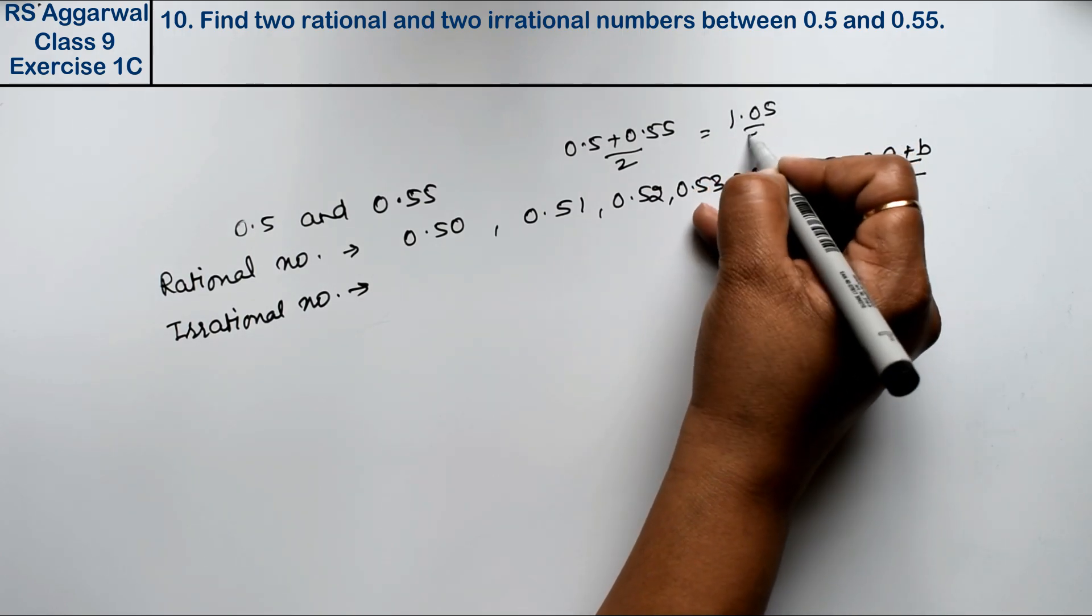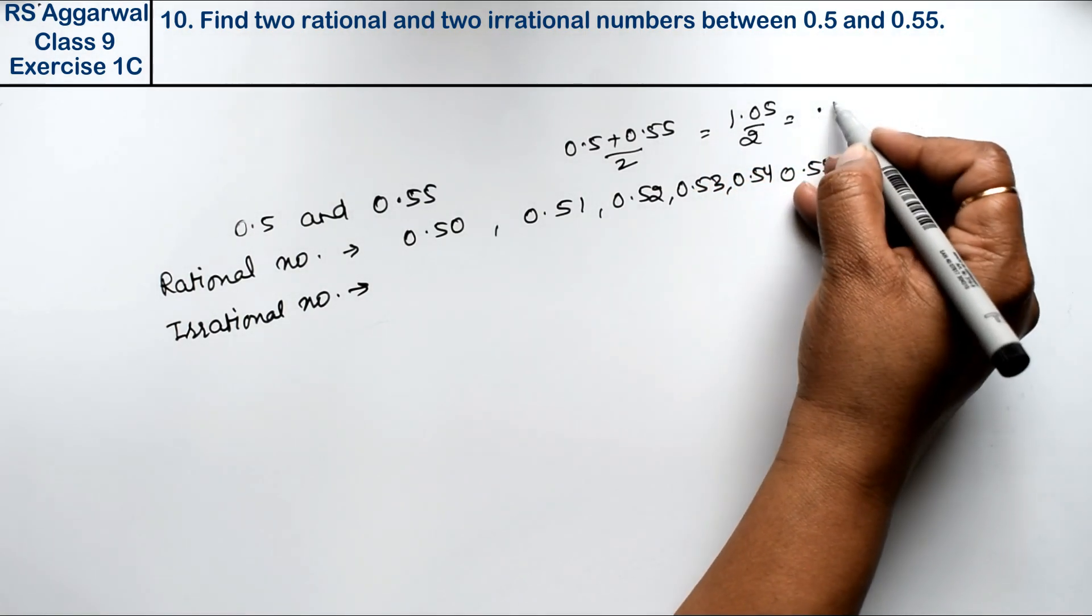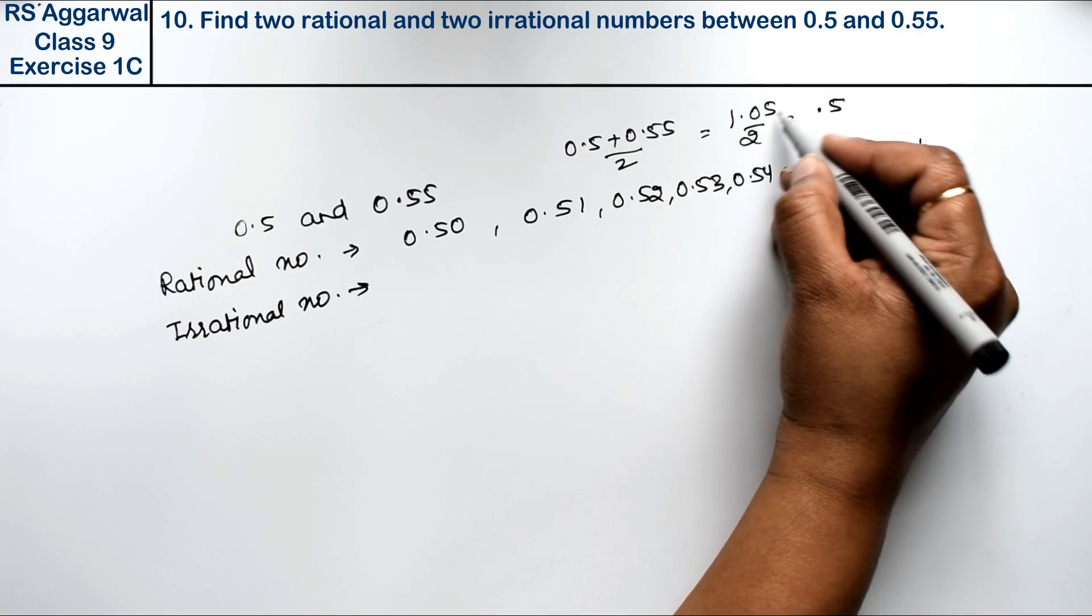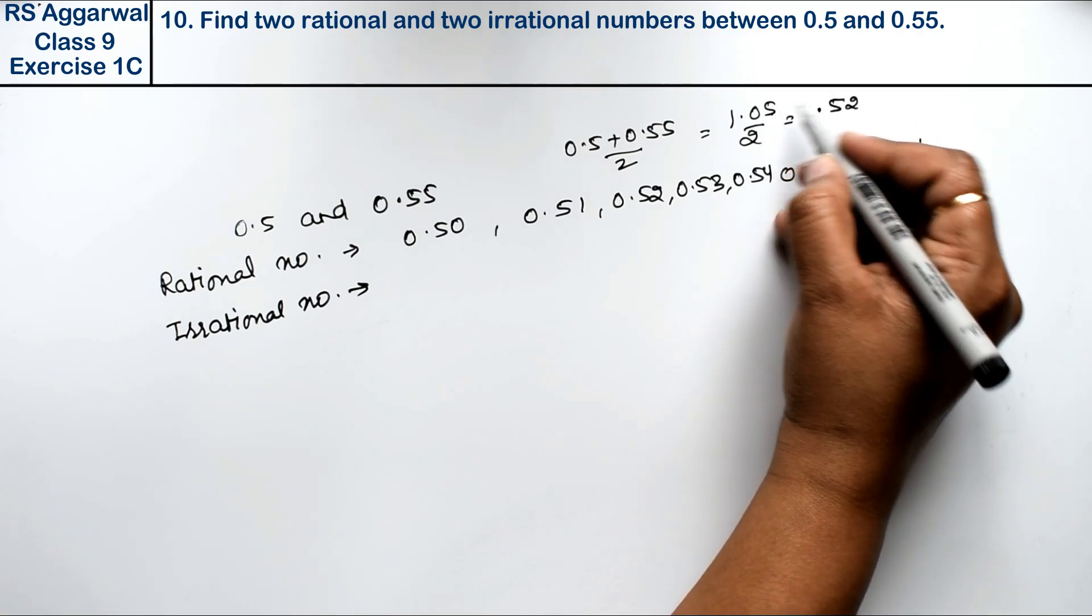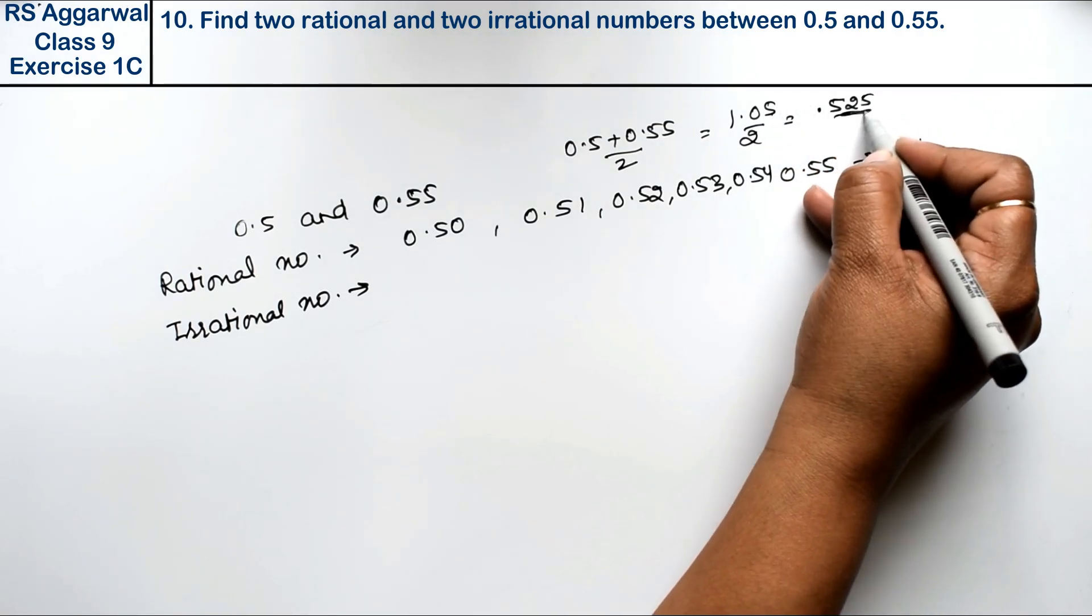1.05 upon 2, this gives us 0.52. Using 2 and 5, this way it will come out.